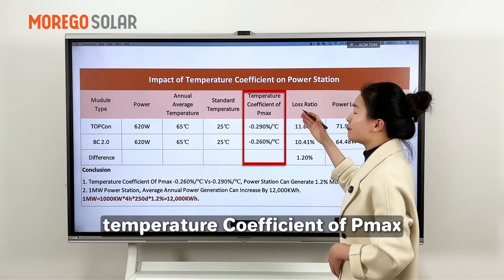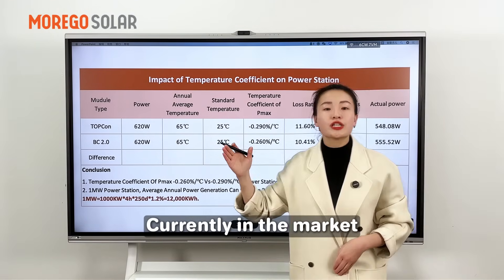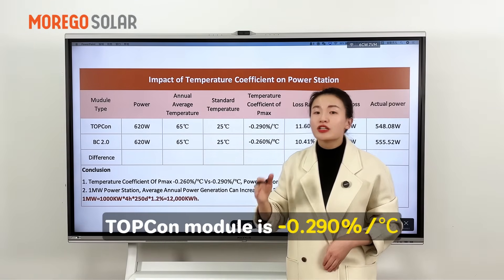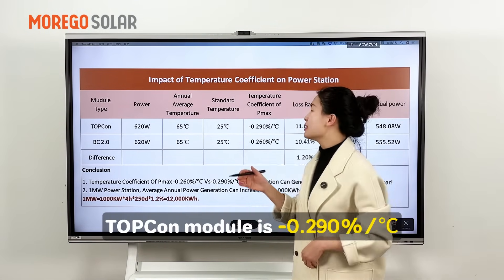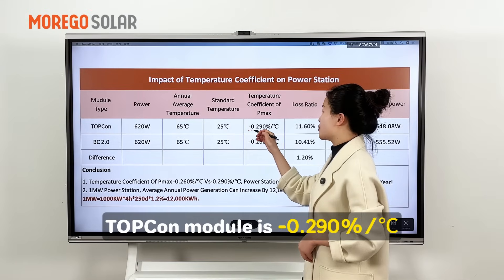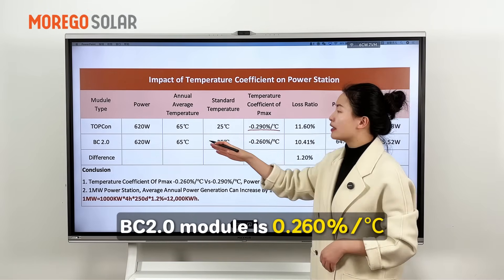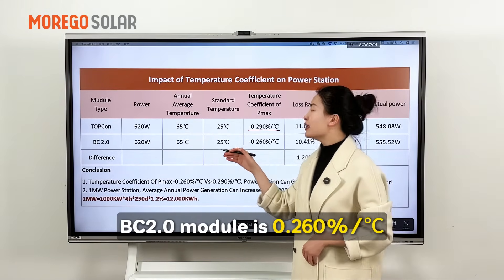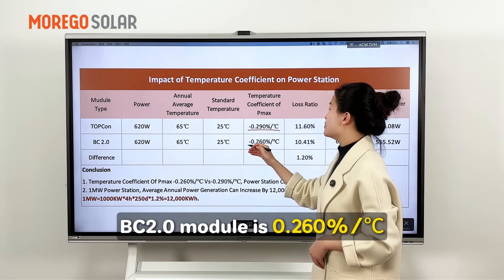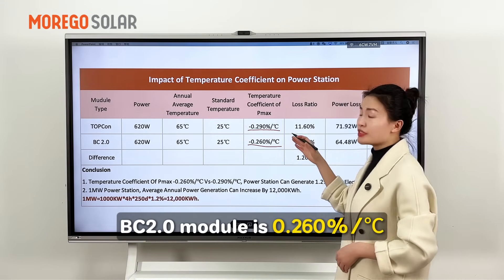Temperature coefficient of max power. Currently in the market, the TopCon module is minus 0.29% per degree, and the BC 2.0 module is minus 0.26% per degree.